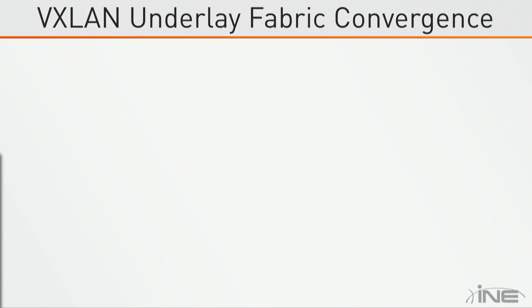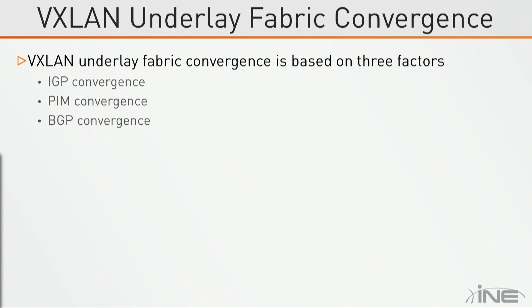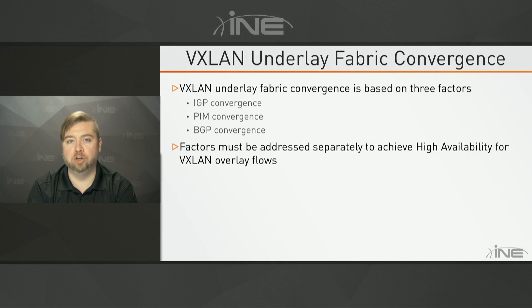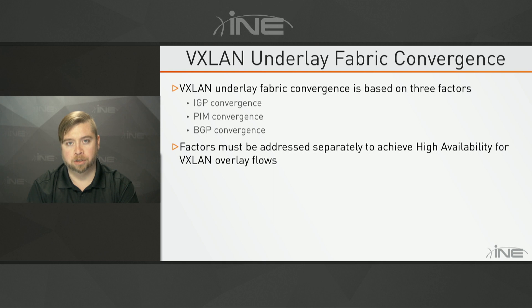The convergence of this type of network design — so like if a link goes down or a node goes down — is going to be a function of three different factors. First is going to be IGP convergence like OSPF or ISIS. Second is going to be PIM convergence for multicast, which would affect our unknown traffic, the broadcast unknowns in multicasts, and then BGP convergence, which is going to be the actual EVPN route. These factors need to be addressed separately in order to achieve full high availability for the overall system.